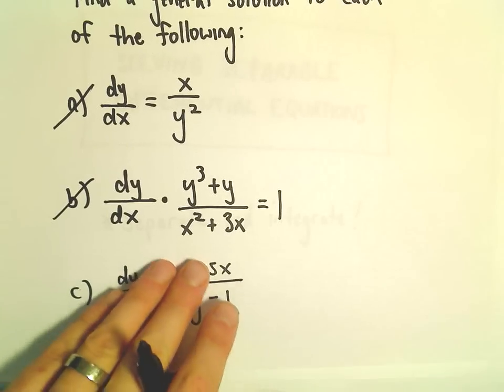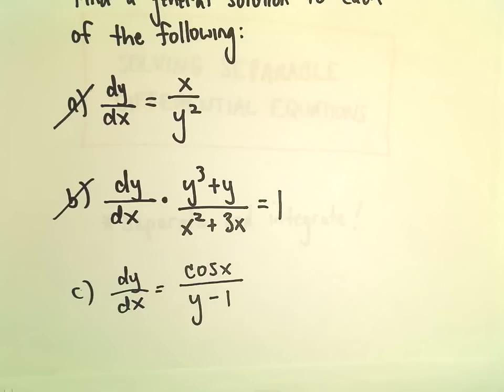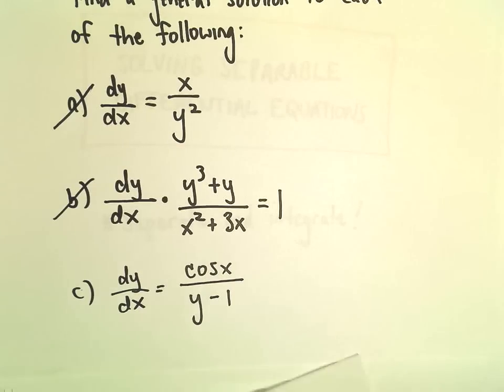Alright, so one more example here of solving a separable differential equation. Part c, we've got dy over dx equals cosine x over y minus 1.